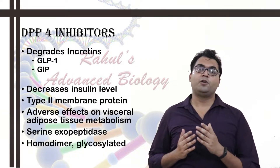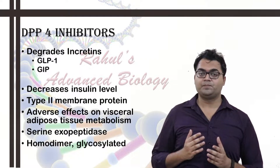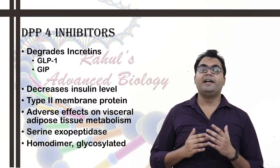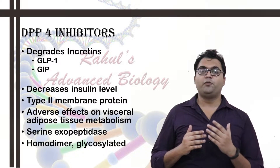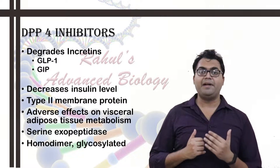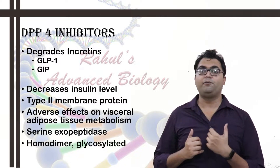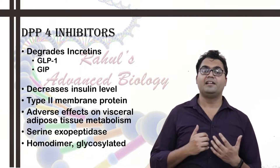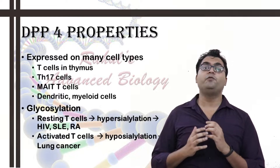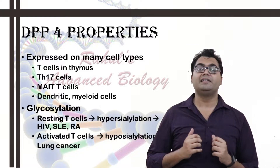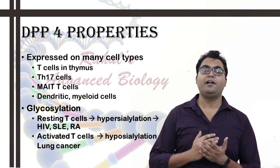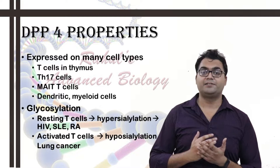DPP-4 is also a homodimer and it needs to be glycosylated. It is expressed on various cells like the endothelium and the epithelium of various organs like lungs, kidneys, etc., and also on various immune cells like natural killer cells, dendritic cells, T cells, myeloid cells, etc.